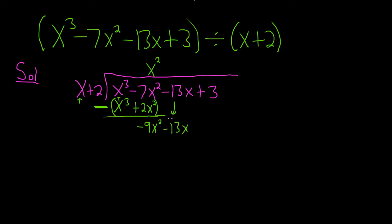Then you repeat the process. You ask yourself, what do you multiply by x in order to get negative 9x squared? So negative 9x. And look, it goes right above the term that has an x. Then you distribute. Negative 9x times x is negative 9x squared. Negative 9x times 2 is negative 18x.